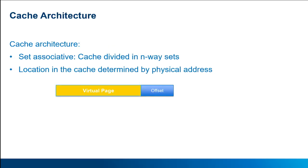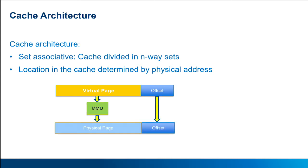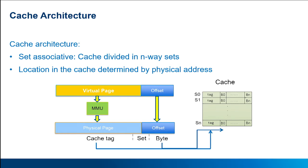Now that we've decided to attack the last-level cache, let's see how it's organized. In modern CPUs it is organized as n-way set-associative caches, meaning the cache is divided into equal-sized n-way sets. The set that a memory block occupies is determined by its physical address. The physical address is divided into three main fields: the cache tag, the set, and the byte offset. The set field is the important one for us as attackers, as it points to the set that the memory block will occupy.